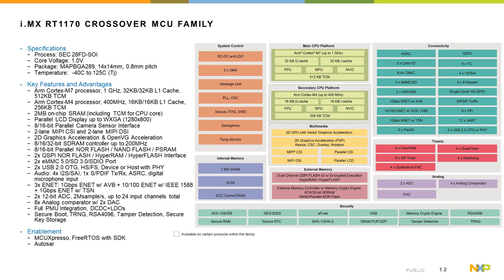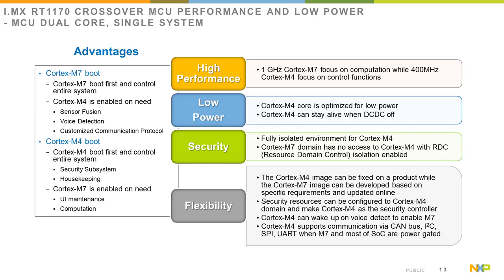Overall, the i.MX RT1170 crossover MCU provides performance and low power in a dual core MCU within a single package. This provides the additional advantage of booting from the Cortex-M7, where the Cortex-M7 boots first and controls the entire system, and the Cortex-M4 can be enabled on demand for things like sensor fusion, voice detection, or customized communication protocols. Alternatively, the Cortex-M4 can boot first and control the entire system and function as a security subsystem or for basic system housekeeping, and the Cortex-M7 can be enabled on demand for UI maintenance and computational needs.